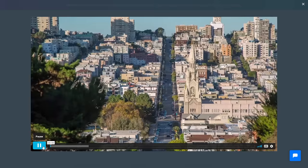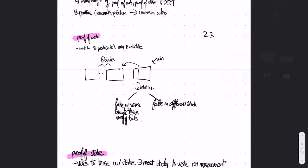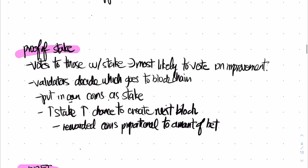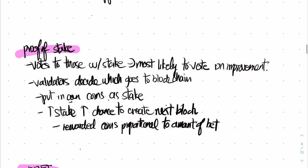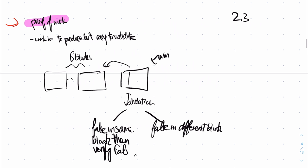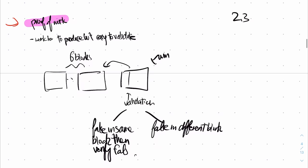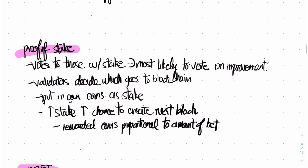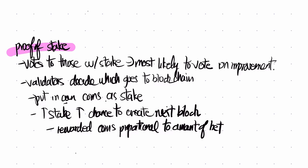Let me make this concrete with an example from the blockchain course I'm currently taking. In this section of my notes, I'm talking about consensus algorithms — don't worry about the terminology, just focus on how I'm taking these notes. There are basically a bunch of different consensus algorithms which are really important for the blockchain, for example proof of stake and proof of work. Each of these you can go into a lot more detail, but all I have written here is: proof of work — hard to produce and easy to validate; and proof of stake — votes go to those with most stake.